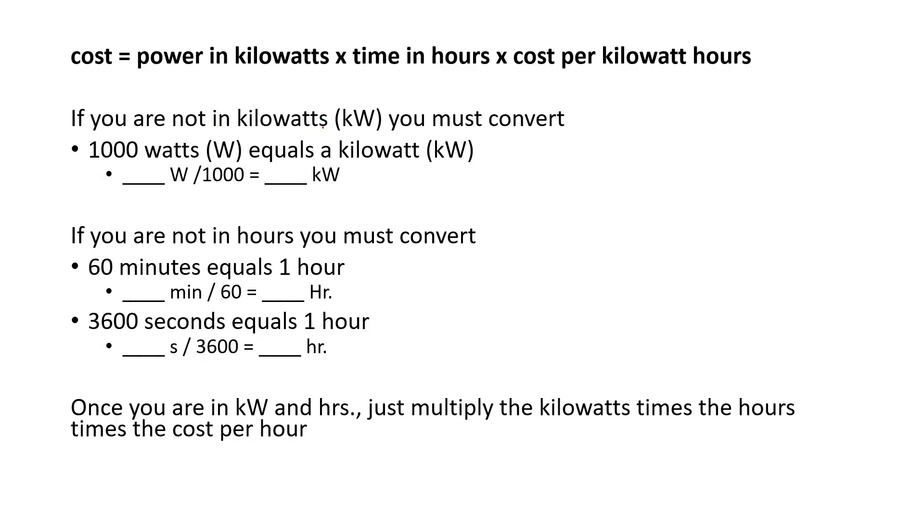If you're not in kilowatts, you must convert to kilowatts. So if you're given watts, like 1,000 watts equals a kilowatt, take whatever, like let's say it was 65 watts divided by 1,000, you get 0.065. You're just going to divide it by 1,000 and then you can be left off with kilowatts. You need to make sure you're in kilowatts. If you're in kilowatts already, you're good. You're not going to have to do any conversions for that part.